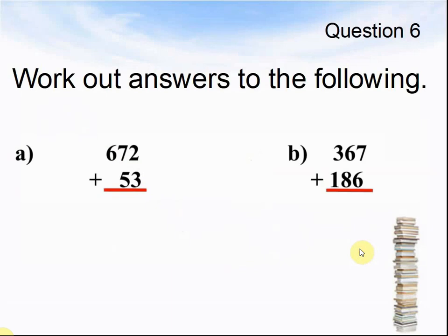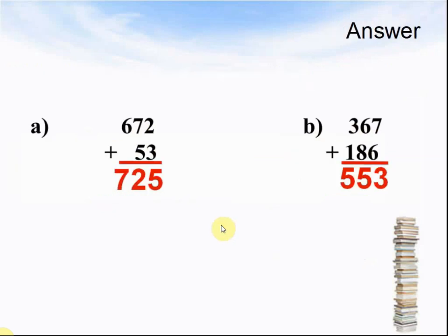Question 6: work out the answers to the following. A) What is 672 plus 53? B) What is 367 plus 186? Pause the video until you are ready for the answer. Here comes the answer: the answer to A was 725, worked out by: 2 plus 3 makes 5; 7 plus 5 makes 12, so put the 2 and carry 1; and 1 plus 6 makes 7.